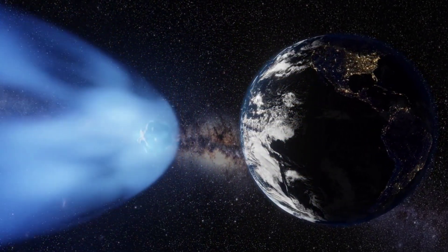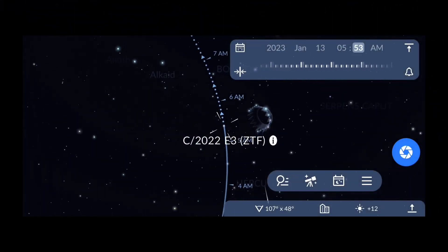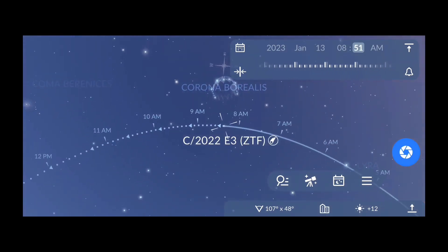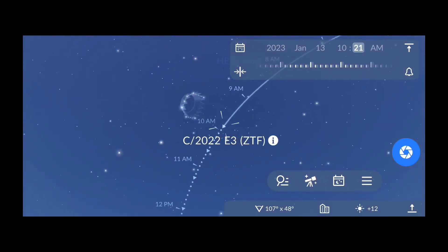Since then, the new long-period comet has brightened substantially and is now sweeping across the northern constellation Corona Borealis in pre-dawn skies. It's still too dim to see without a telescope though.